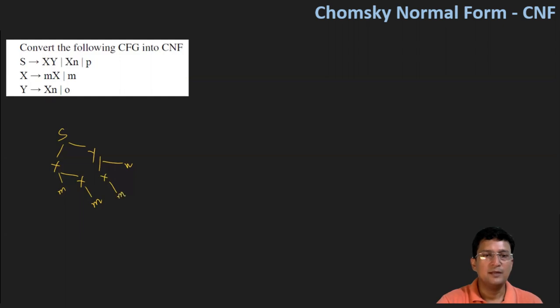You can see that each production leads to a terminal symbol, so there are no useless symbols here. There are no unit productions and no null productions here, so our simplification becomes easy. We simply number the productions.